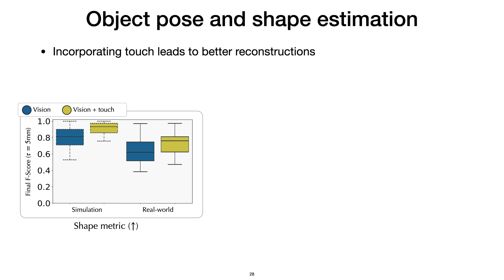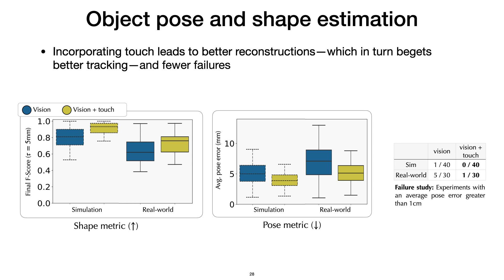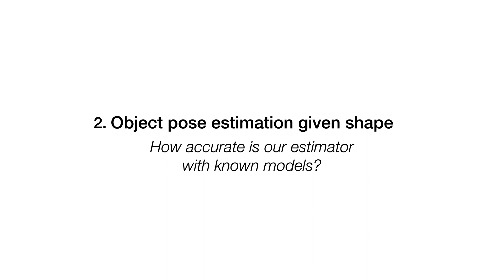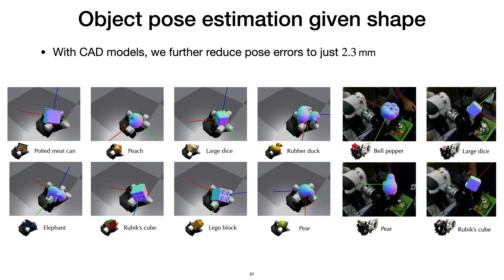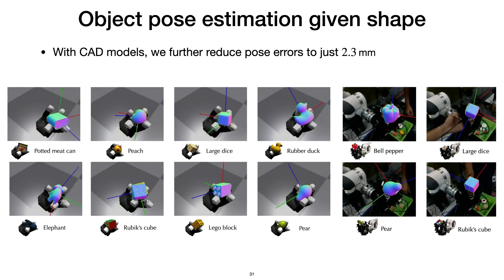Adding touch gives us better reconstruction accuracies compared to vision only — higher is better in this graph. We also see corresponding trends in pose error — lower is better. These trends broadly align in both simulation and the real world, relating back to the chicken-and-egg problem of SLAM. There are also far fewer failure modes in estimation with vision and touch compared to vision alone. We show average mapping and pose metrics for concrete numbers. If we assume we know the object model — a tracking with known model problem — we can further reduce pose errors by half, to within two millimeters of accuracy with respect to the ground truth.